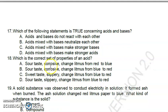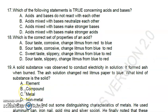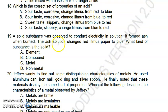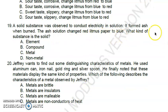Number seventeen: which of the following statements is true concerning acids and bases? The answer is letter B - acids mixed with bases neutralize each other. Number eighteen: which is the correct set of properties of an acid? The answer is letter B - sour taste, corrosive, change litmus from blue to red. Number nineteen: a solid substance was observed to conduct electricity in solution. It formed ash when burned. The ash solution changed red litmus paper to blue. What kind of substance is the solid? The answer is letter C, metal.